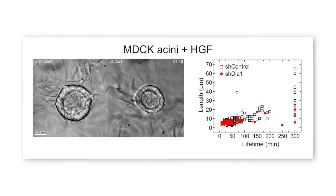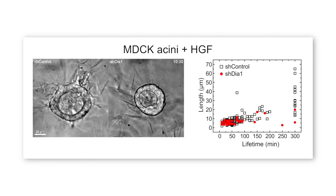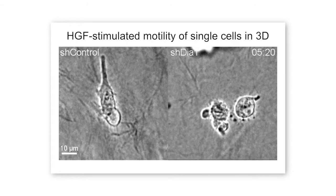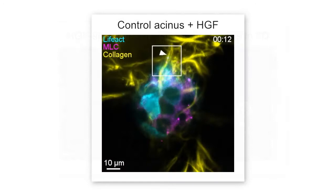The protrusions are not stable — the cells can still send out protrusions just fine, but their stability, their ability to maintain persistent forward motion, is impaired. So the cells had problems adhering and migrating along the matrix, both as isolated single cells and as a single cell migrating away from an epithelial mass.